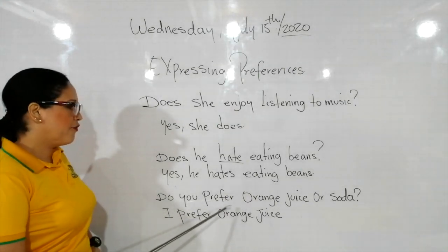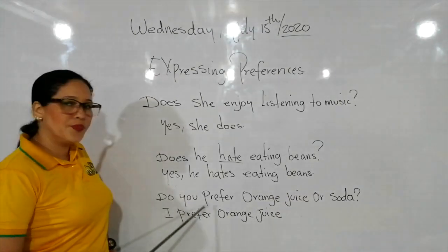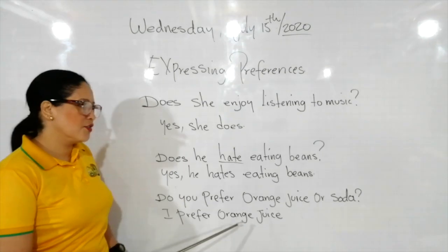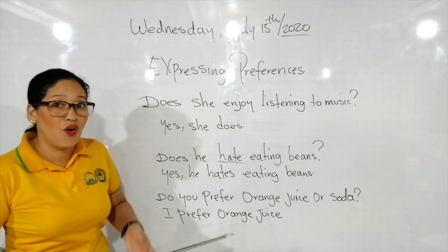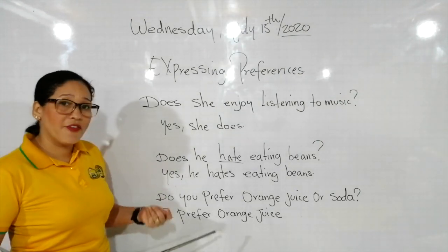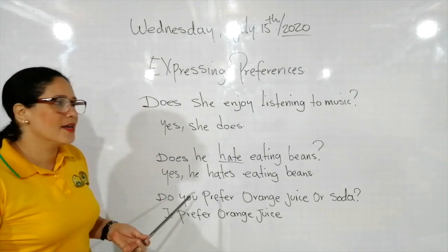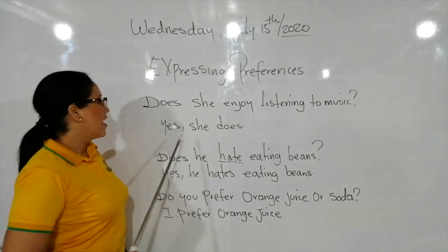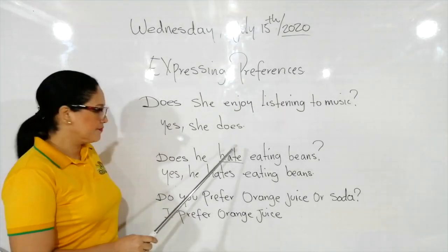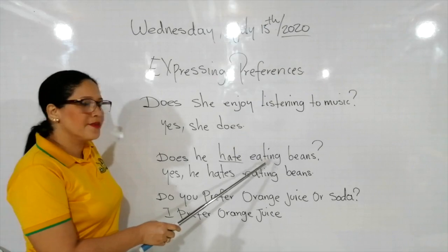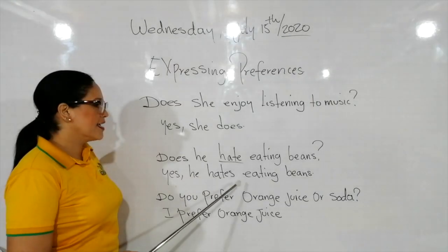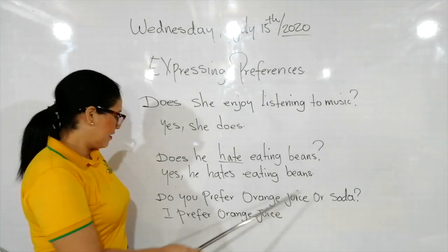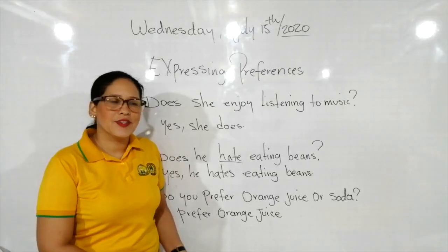La otra oración: do you prefer orange juice or soda? — ¿prefieres jugo de naranja o gaseosa? I prefer orange juice. Pronunciación: does she enjoy listening to music? Yes, she does. Does he hate eating beans? Yes, he hates eating beans. Do you prefer orange juice or soda? I prefer orange juice.